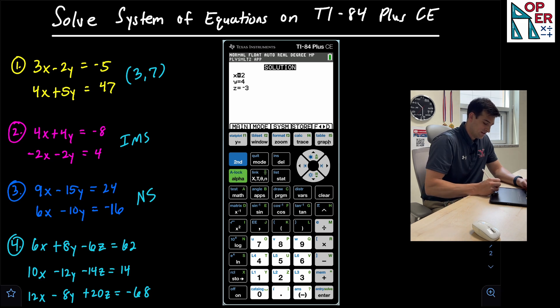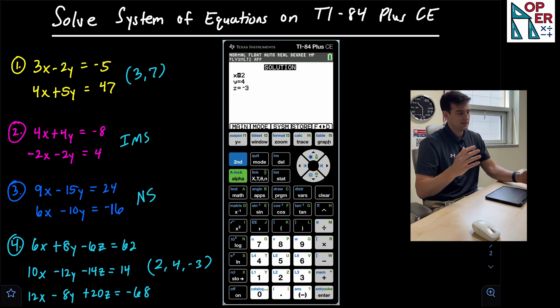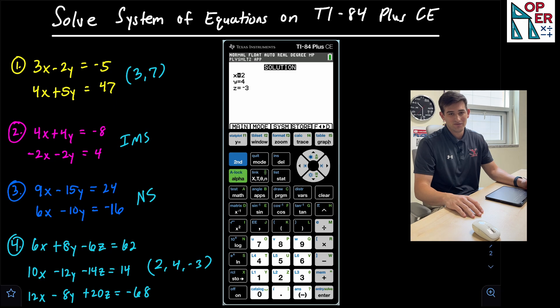So now we could write this as two comma four comma negative three. So X is two, Y is four and Z is negative three. And that is how you can solve a system of equations using the simultaneous equation solver on the TI-84 plus CE graphing calculator.